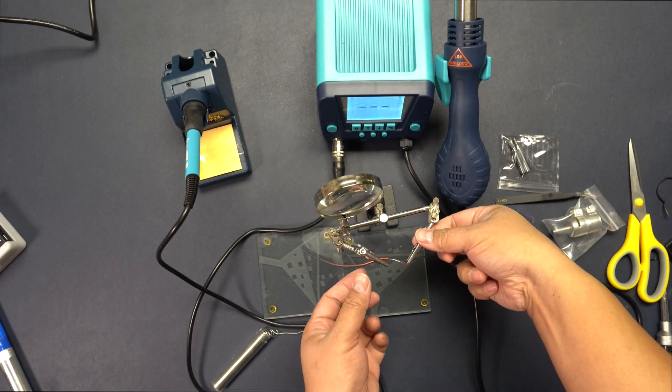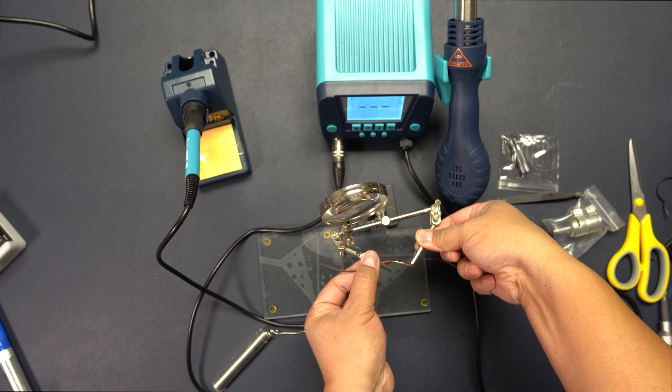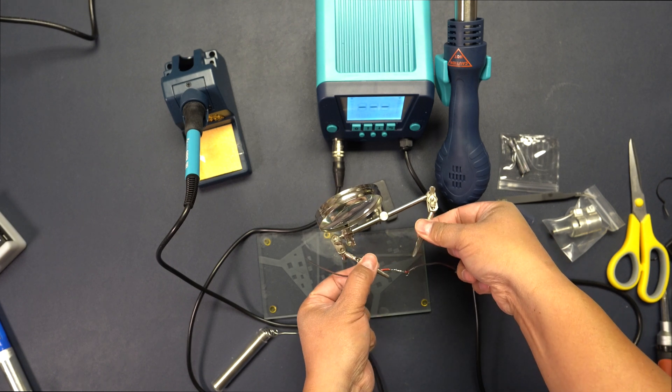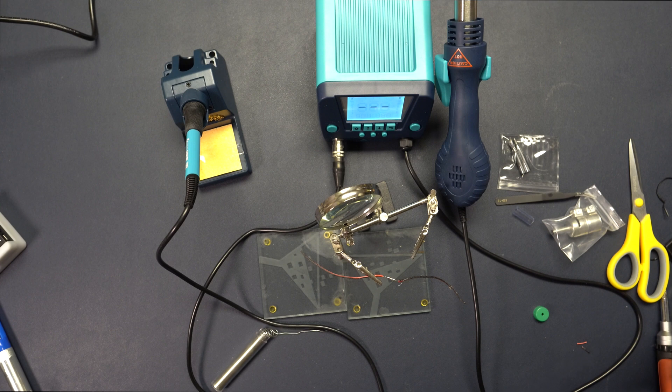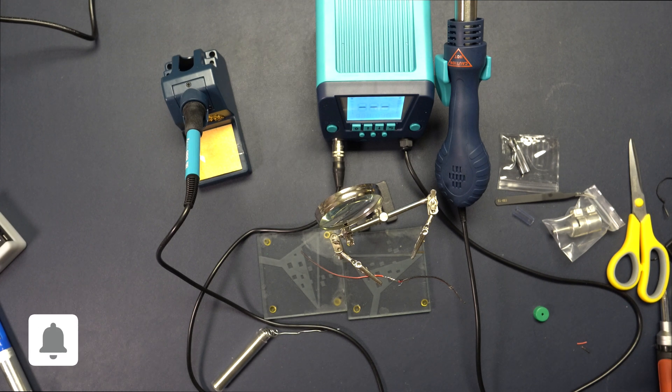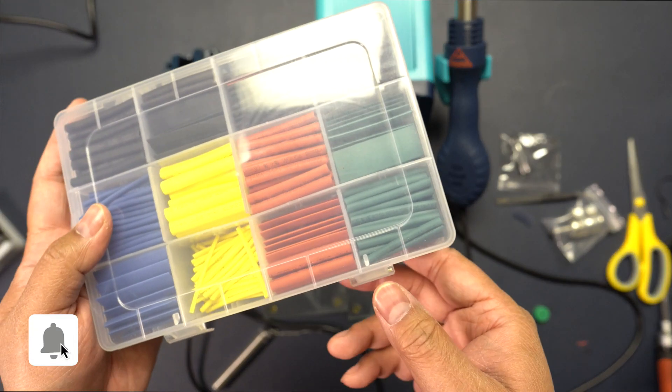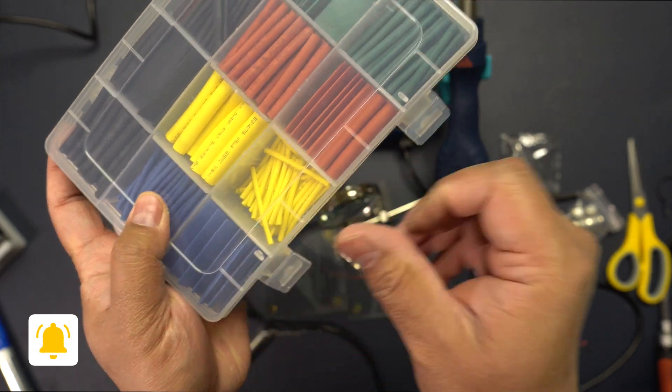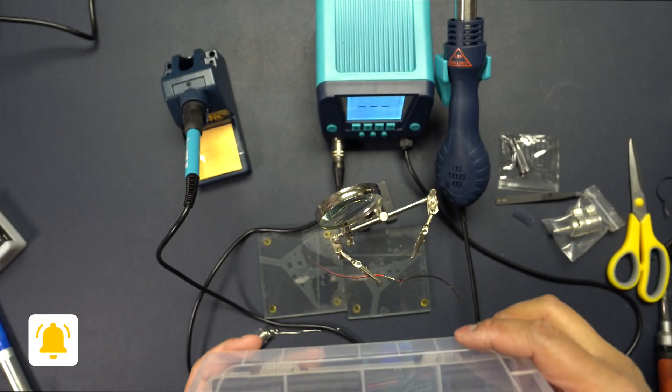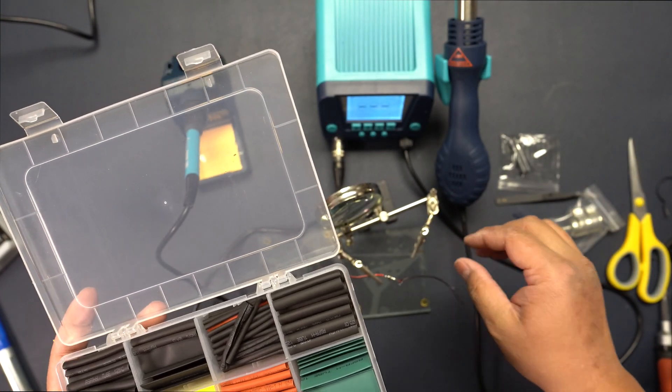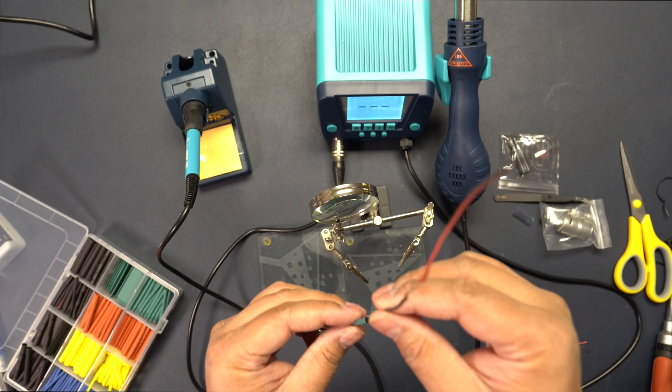So now what I'm gonna do is I'm gonna wrap this around. I'm gonna get some shrink tube. I mean, you can use electrical tape as well, but let me see which one of these would fit. This one might be just right. Like this.